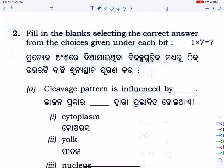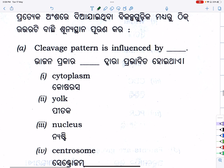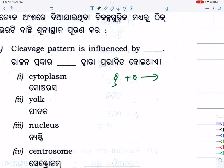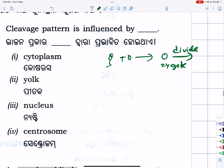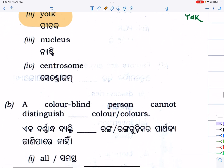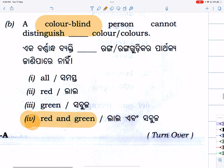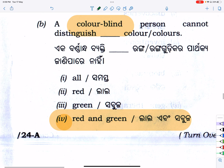Fill in the blank, selecting the correct answer from the choices given: cleavage pattern is influenced by yolk. Yolk — which type of yolk? Yolk decides the cleavage pattern. Next: a colorblind person cannot distinguish which colors? They cannot distinguish red and green — red and green color is the correct option.